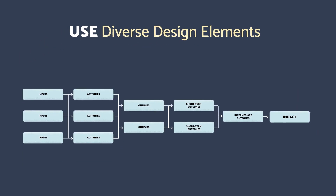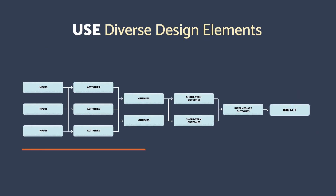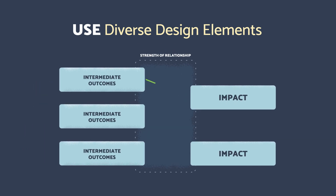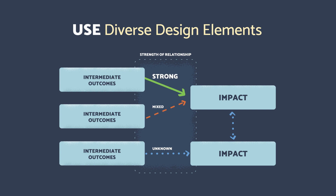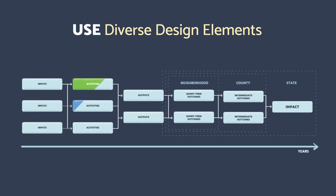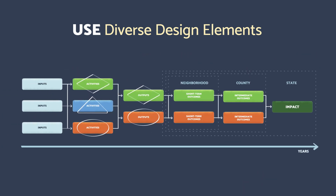We can convey complicated adaptations in a number of ways, like placing time or scale boundaries in and around our model. Using different types of lines and arrows allows us to show relationships and the strength of those relationships. A bolder or more solid line can convey a stronger relationship or hypothesized relationship between items in the boxes. Varying shades of color and different shapes or symbols can convey different categories or intensities of connections or relationships.